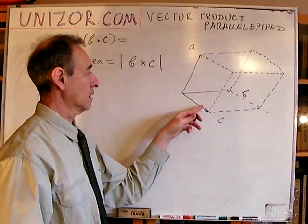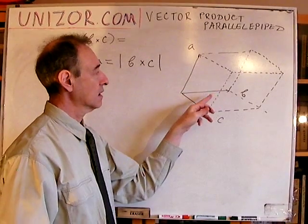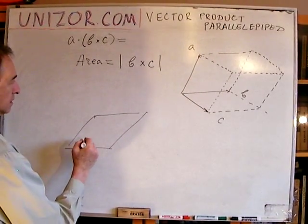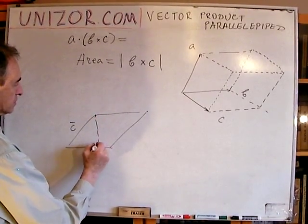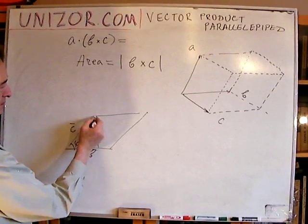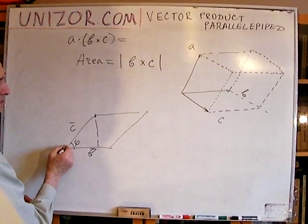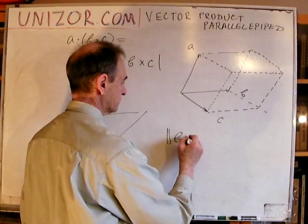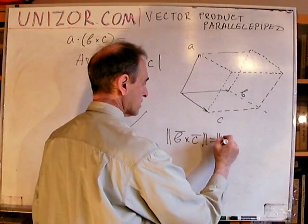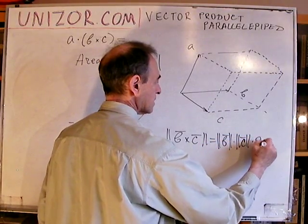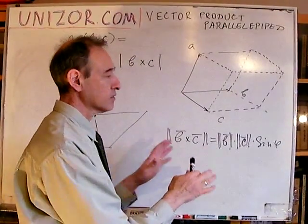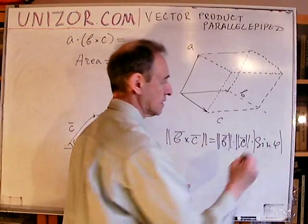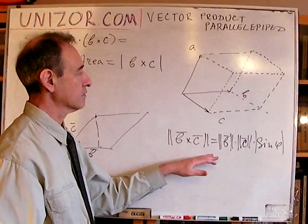The volume of a parallelopiped is the area of the base times the altitude. The base is a parallelogram, and the area of the base equals the absolute value of B×C — the vector product. This is because vector product magnitude equals the length of B times the length of C times the sine of the angle between them, which is exactly the area of the parallelogram.